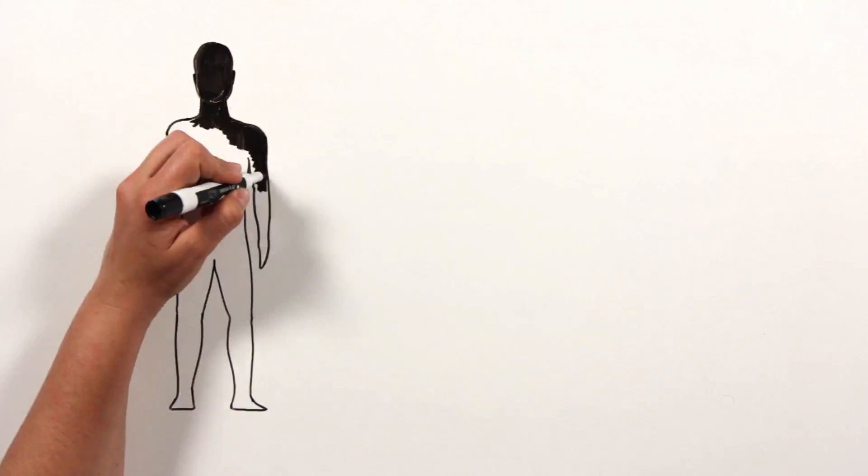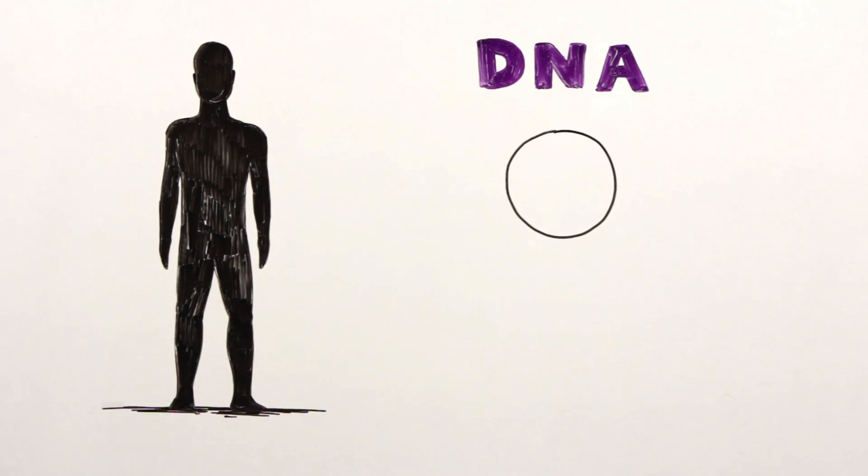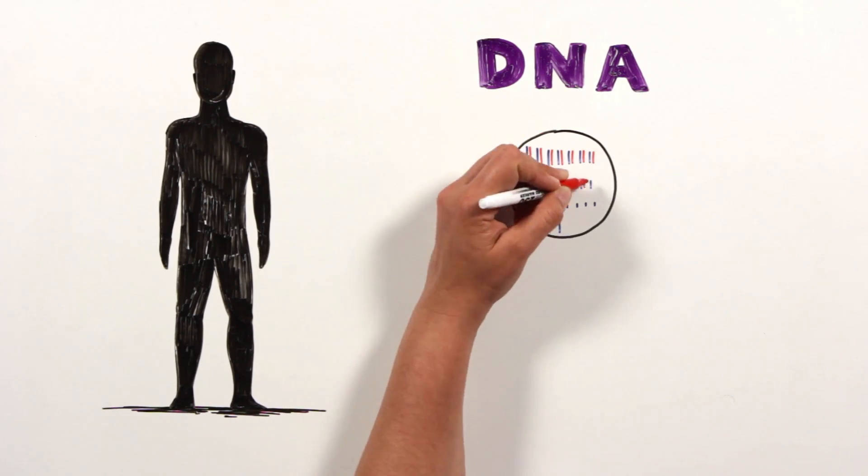The cells in our body contain genetic information in the form of DNA. This DNA is packaged into 23 pairs of chromosomes, making a total of 46 chromosomes.